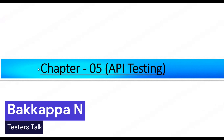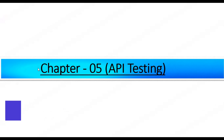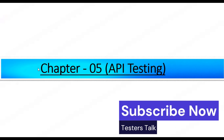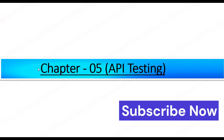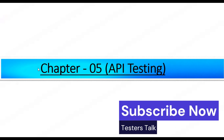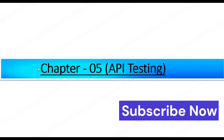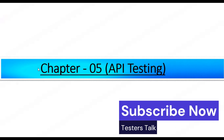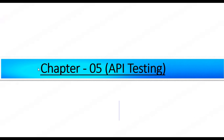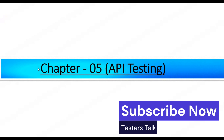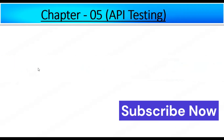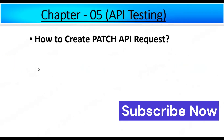Hey, hi friends, this is Bakappa. In the previous tutorial I discussed how to install Newman tool, how to execute Postman collections from the command prompt, how to generate the Newman HTML report, and how to generate the Newman advanced HTML report after executing the collections from the command prompt. In this Chapter 5 of the API Testing tutorial, I will discuss how to create the PATCH API request.